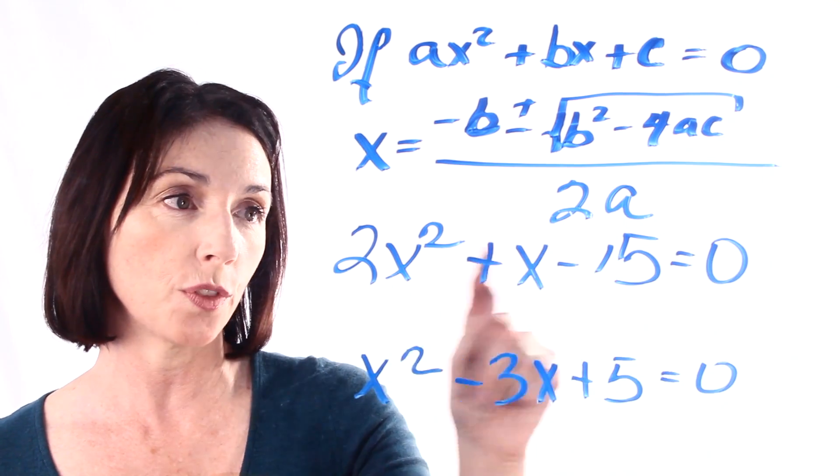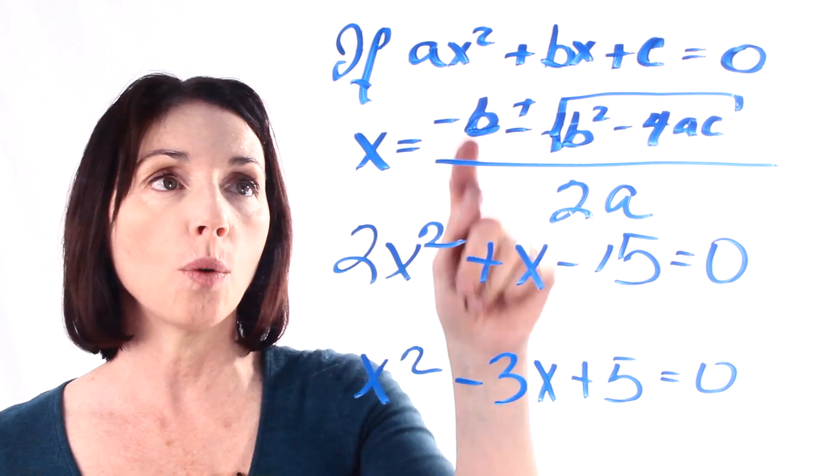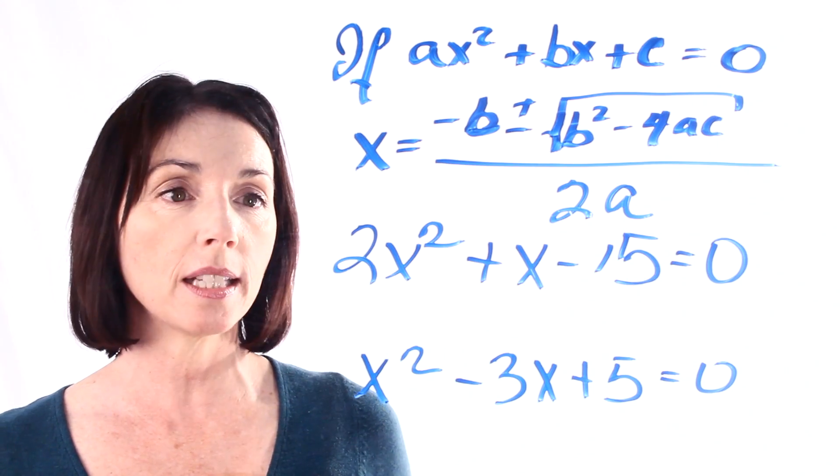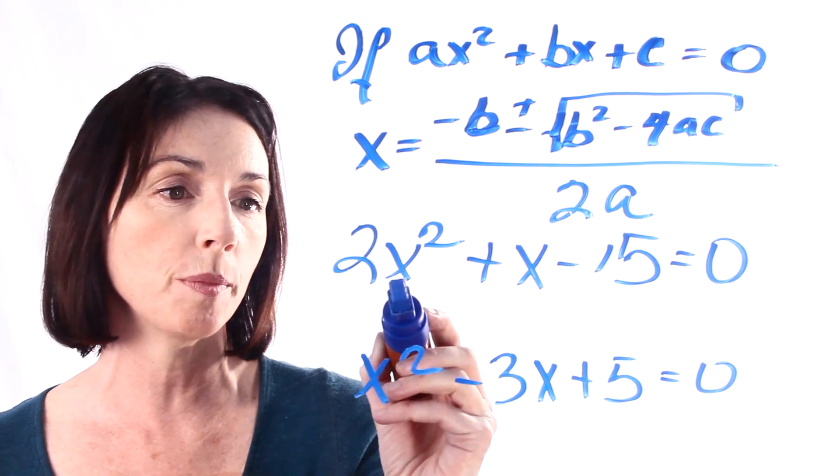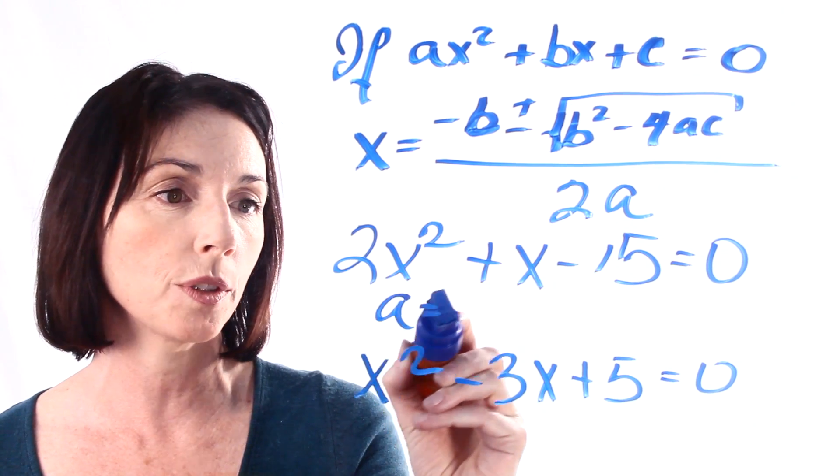So, let's look at this first one here. a is always the coefficient of the x squared term. So, in this case, the coefficient of our x squared term is 2. So, a equals 2.